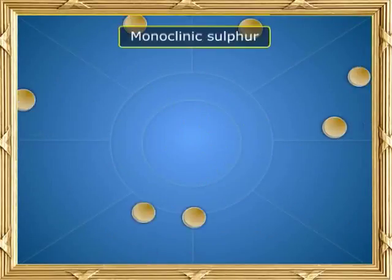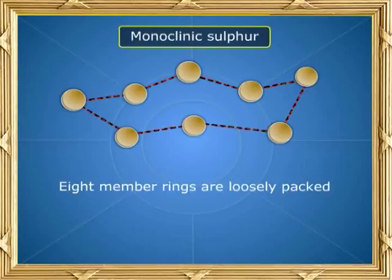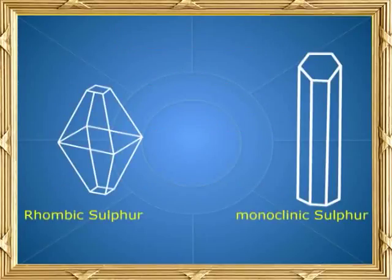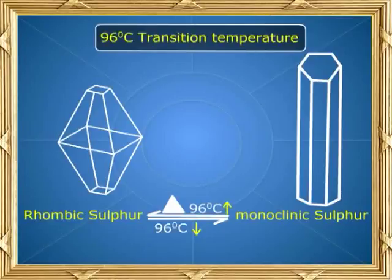Monoclinic sulphur also consists of eight-membered rings, but the rings are loosely packed. Rhombic sulphur can be converted into monoclinic by heating it above 96 degrees Celsius, so these two forms can be interchanged. This temperature at which both forms exist in equilibrium is called the transition temperature.